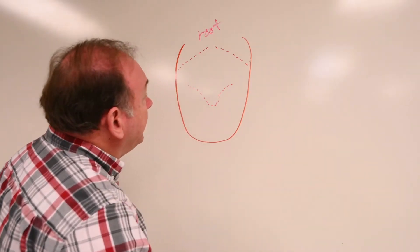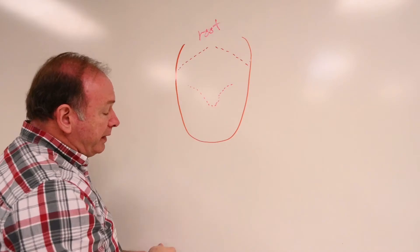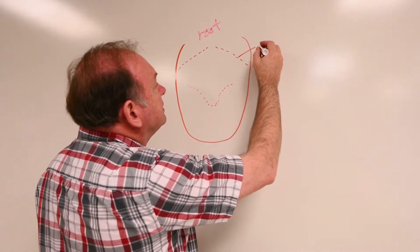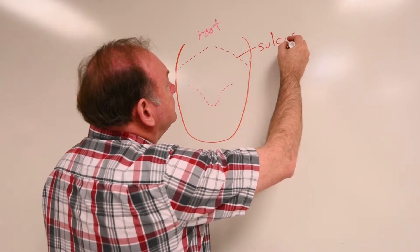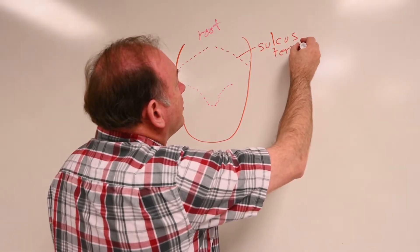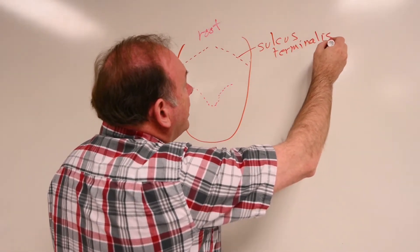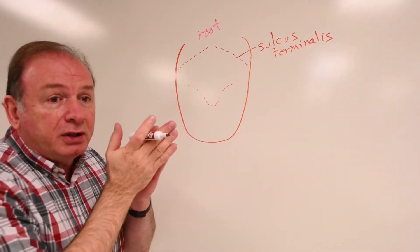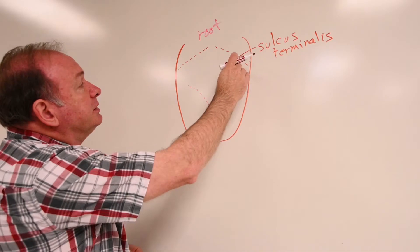Now I put a dotted line across the tongue right there, and we're going to call that dotted line the sulcus terminalis. Sulcus is usually kind of a groove or depression, a linear depression in something.